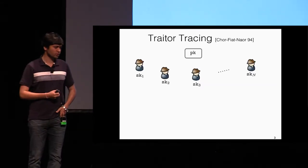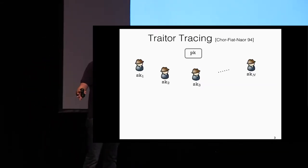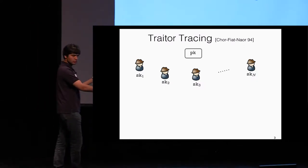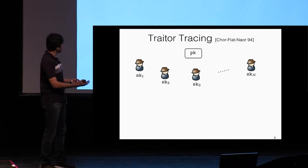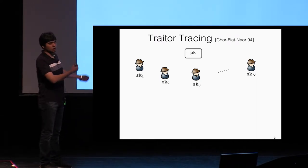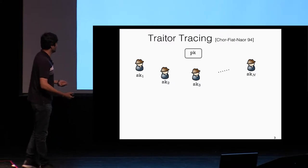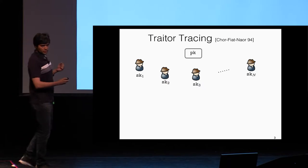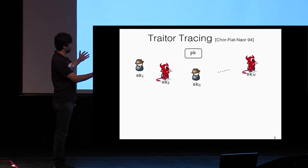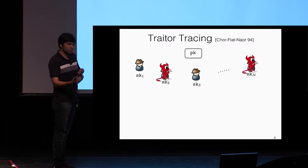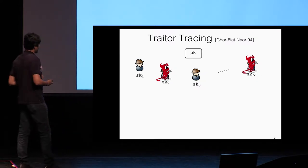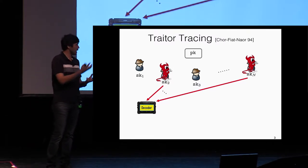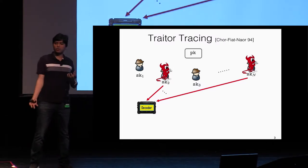So what is traitor tracing? Consider a broadcasting scenario. Suppose we have n users in the system. Each user has their own private secret key, and we have one common public key. We can use the public key to encrypt any information of our choice. The property is that any of these end user keys could be used to decrypt the corresponding ciphertext to learn the message. Now suppose an adversary is able to corrupt some of these users, and using the corrupted secret keys, the adversary could potentially create some special decoding device or a decoder box, such that this decoder box can also receive ciphertexts encrypted on the public key and output the corresponding messages.